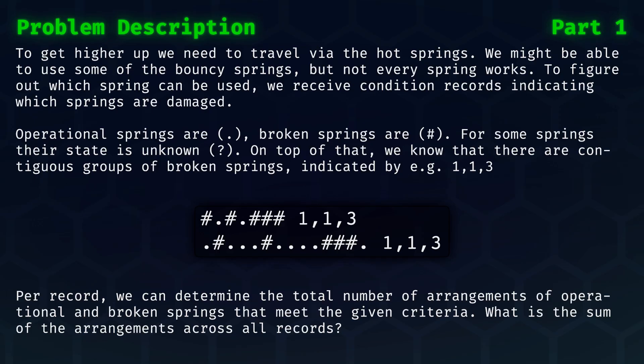As we get higher and higher up during our journey, we need to travel via the hot springs to get to the next level. We might be able to use some of the bouncy springs, but not every spring works. To figure out which spring can be used, we receive condition records indicating which springs are damaged.